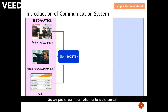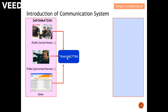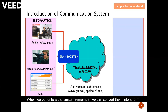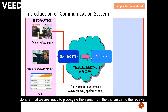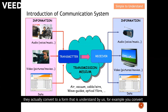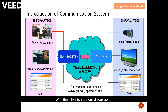We put all our information onto a transmitter and convert it into a form suitable to be carried over the transmission medium — whether cable, optical fiber, or air. After propagation, the receiver receives the signal from the transmission medium and converts it to a form understandable by us, such as music, a TV program, or data. With this, I'd like to stop our discussion — please help to like and subscribe. Thank you so much!